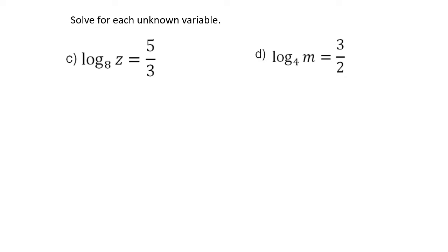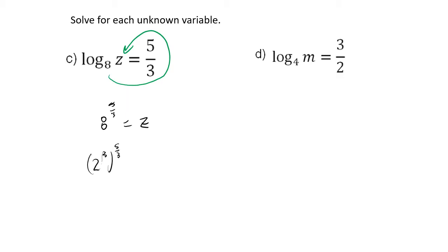Log base 8 of z equals 5/3. We do the loop trick: 8 to the 5/3 power equals z. Now, 8 to the 5/3 is a bit tricky, but we can rewrite 8 as 2 to the 3rd power, raised to the 5/3. Powers of powers multiply: 3 times 5/3 gives us 2 to the 5th. So z equals 2 to the 5th, which is 32.